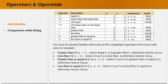We have greater than, less than, greater than equal to, less than equal to, not equal to, and we also have triple equal to and not triple equal to. We will learn about the difference between double equal to and triple equal to, and also the difference between not equal to and not equal to equal to.